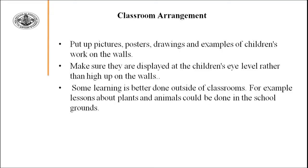Another element of classroom arrangement is to put pictures, posters, drawings, and examples of children's work on the wall — making sure they are displayed at the children's eye level rather than high up. Some learning is better done outside the classroom; for example, lessons about plants and animals could be done in the school ground. The teacher can go outside and give children direct interaction with those things, so children learn using all their senses.